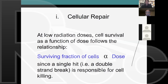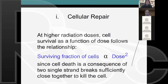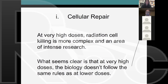At higher doses, radiation cell killing is a consequence of accumulated damage—many, or at least two, single-strand breaks that are close enough together, or other types of DNA damage close enough to cause cell death. Here, the amount of killing is proportional to the radiation dose squared, since cell death results from two single-strand breaks. At very high doses it's more complex, and it's unclear whether a new biology is needed, partly because measurement error is large at very high doses.